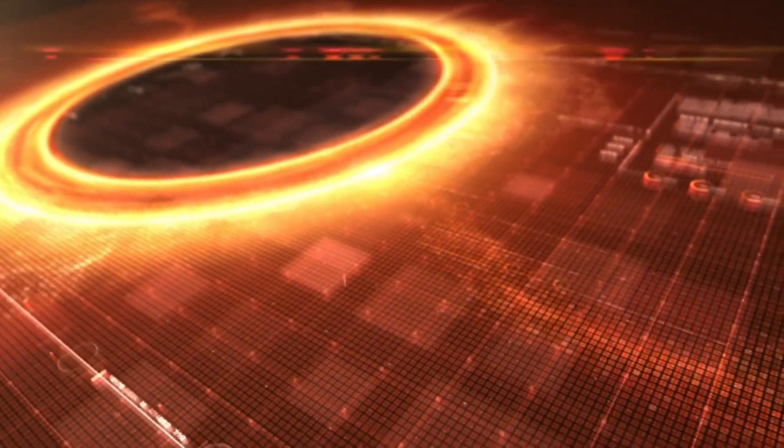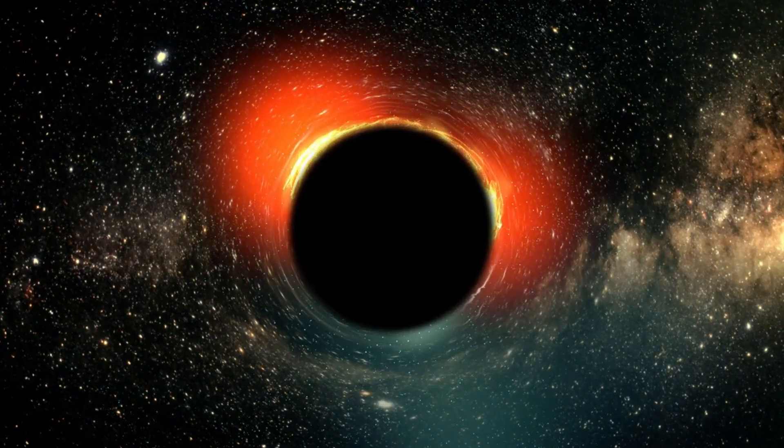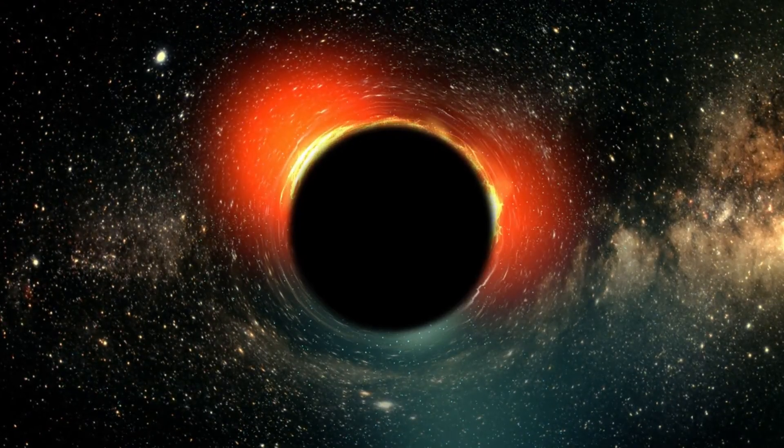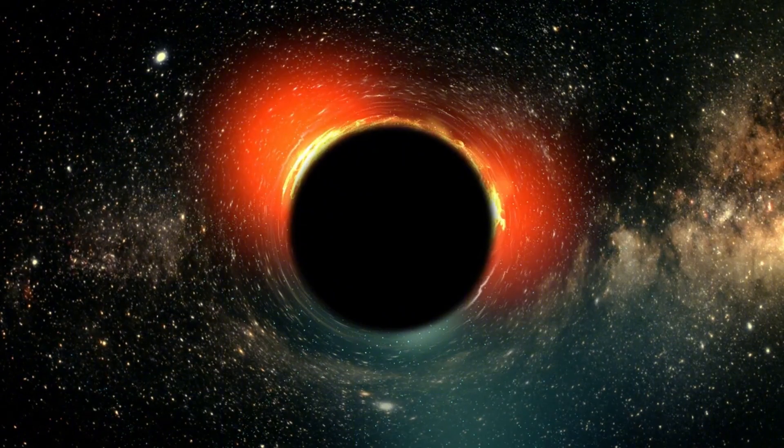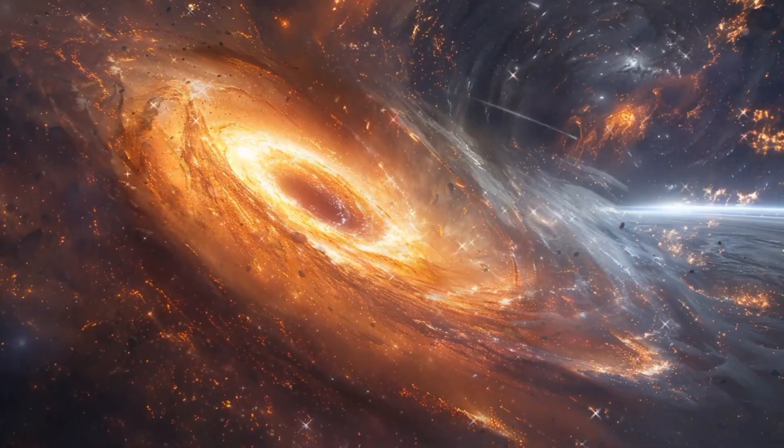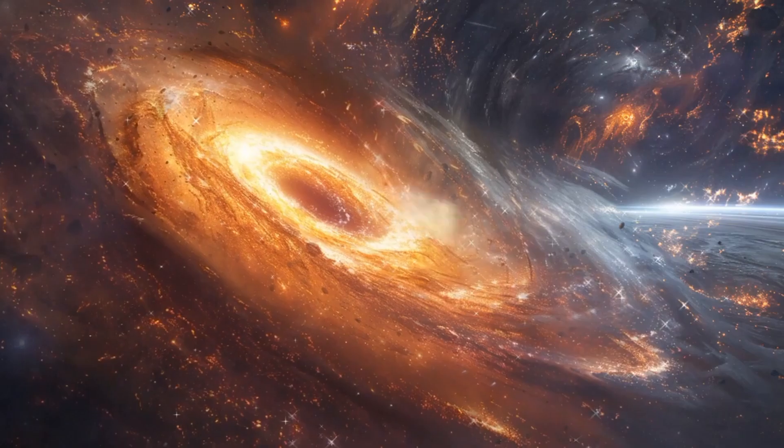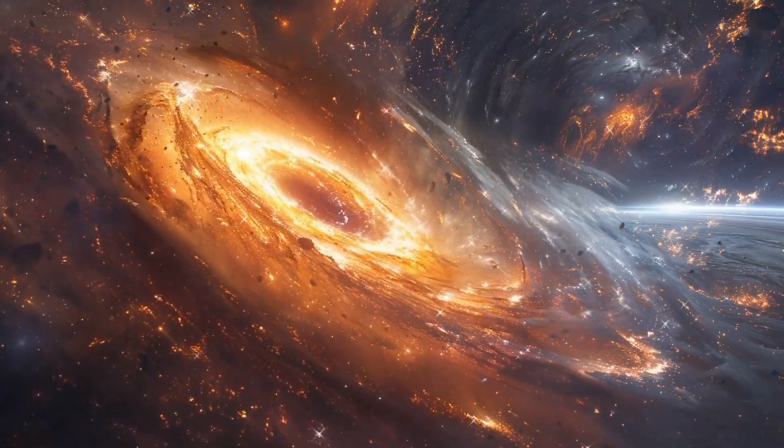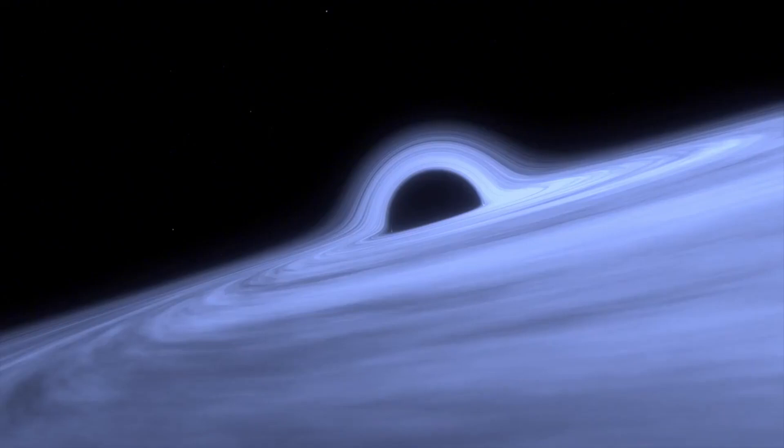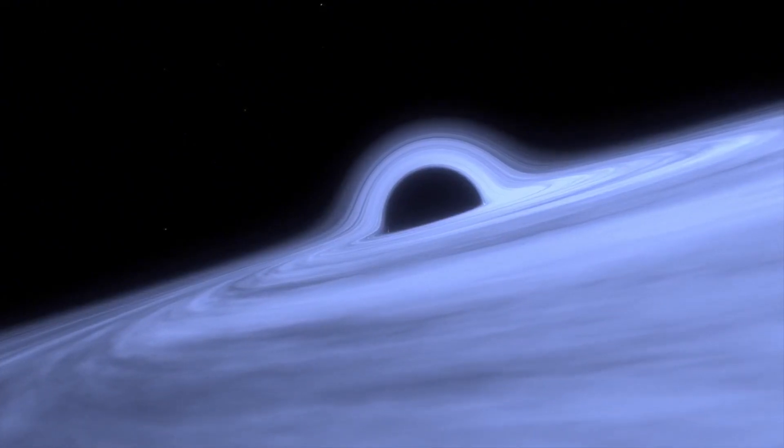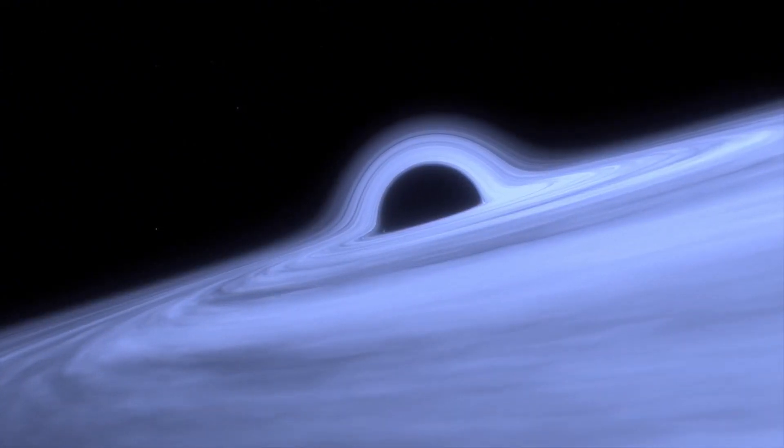As more data was gathered, researchers were able to discern that black holes consist of three distinct layers, contrary to the common misconception that they are just endless voids. The first of these layers is called the event horizon, which marks the point beyond which nothing can escape. Once something crosses this boundary, it is inevitably drawn toward the black hole.